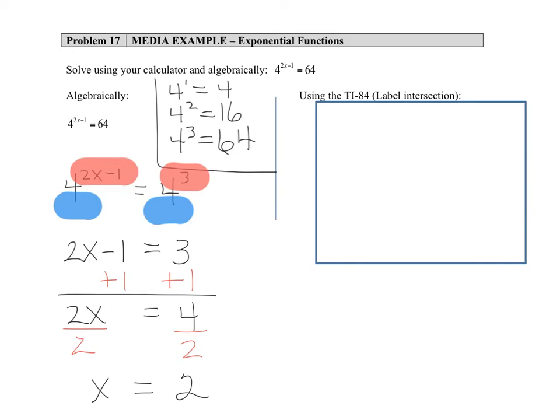So we've solved our exponential equation algebraically, and now we're going to verify that in one of two ways. First, we'll just replace the variable with the solution in the original problem. So we have 4 to the 2 times x, which is 2, minus 1, and we want to see does that have the same value as the right-hand side of 64.